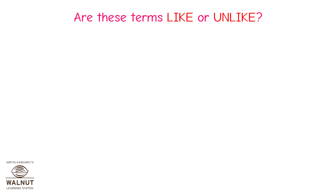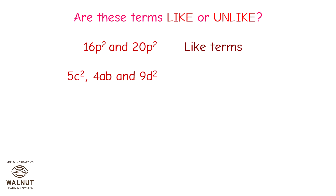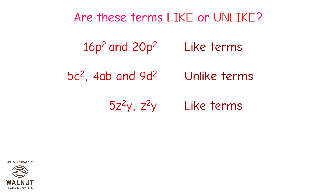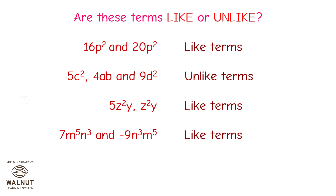Are these terms like or unlike? 16P⁶A⁶B and 9P⁴A⁵ — unlike terms. 5C², 4AB, and 9D² — unlike terms. 5Z²Y and Z²Y — like terms. 7m⁵ and n³, and -9n³ and m⁵ — like terms. -5ab²c and 5abc² — unlike terms.